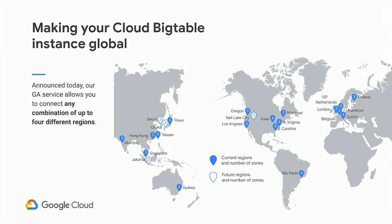We put out a blog post this morning announcing that we went GA with global replication for Cloud Bigtable. What this will allow you to do is replicate your data between any four regions around the world — you can have two regions with two zones in one region and two zones in another, or you could have one zone in each of four regions.